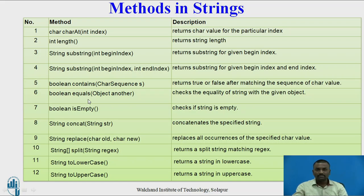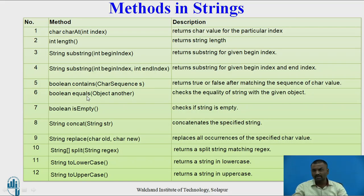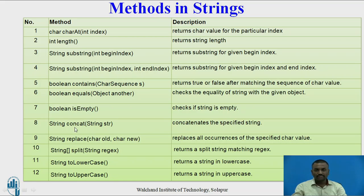Moving ahead, boolean contains takes a CharSequence — if a particular string contains that character sequence, it returns a boolean value of true or false. The equals method takes an Object as input and is used to compare two strings; it returns true if they are equal and false if they are not. The isEmpty method checks whether a string is empty and also returns true or false.